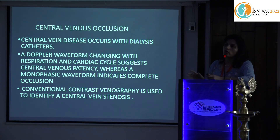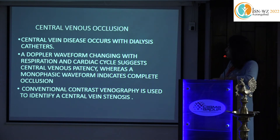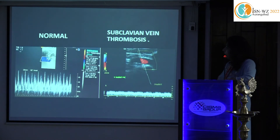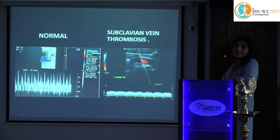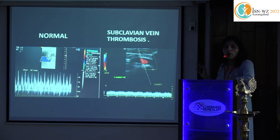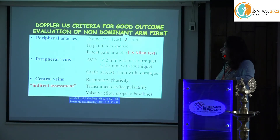If loss of phasicity is found, this needs to be reported and documented with a venogram or CT venogram. A normal subclavian shows a lot of turbulence and phasic flow, but if you see loss of phasicity in the waveform, even without being able to visualize the thrombus directly, you must tell the surgeon that there is probable central venous occlusion, stenosis, or thrombosis that needs further workup.